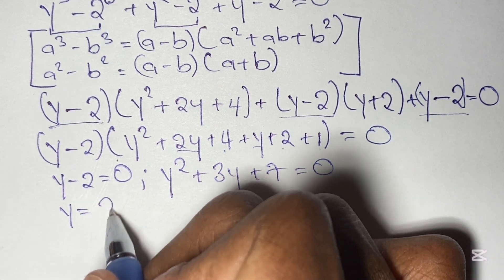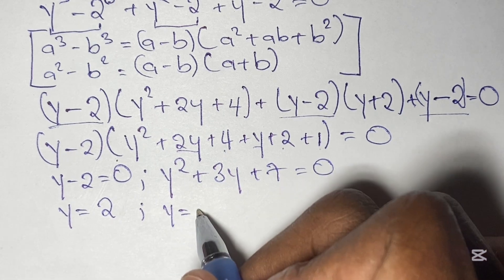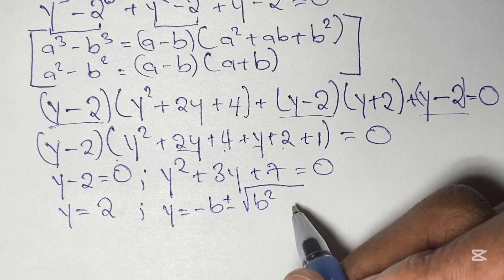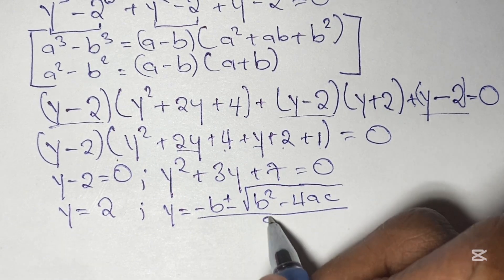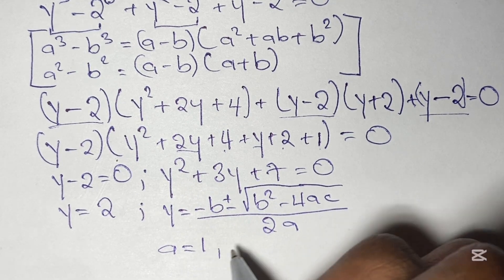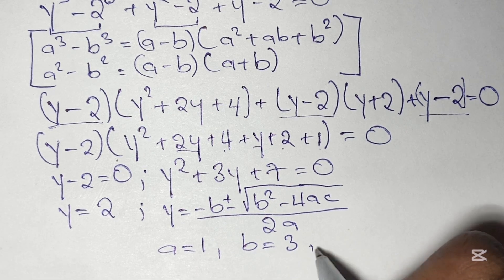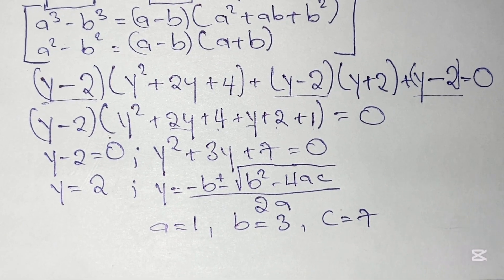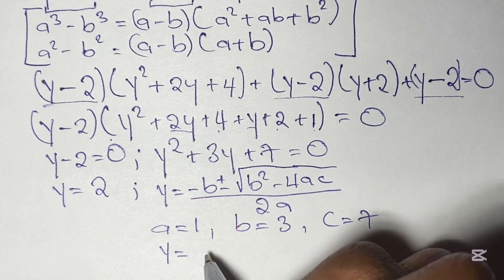Our first solution is y equals 2. For the second factor, we solve y squared plus 3y plus 7 equals 0 using the quadratic formula: y equals negative b plus or minus the square root of b squared minus 4ac, all over 2a. Here a equals 1 (coefficient of y squared), b equals 3 (middle term), and c equals 7 (constant term).